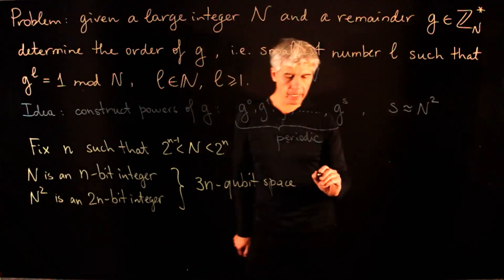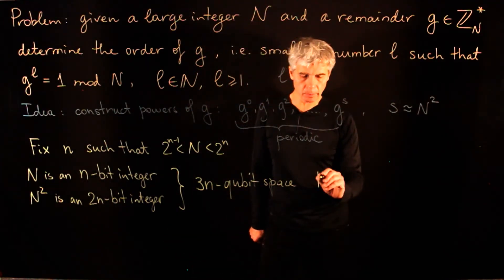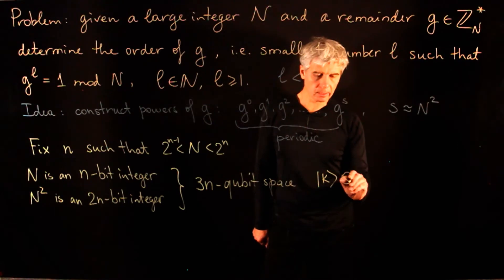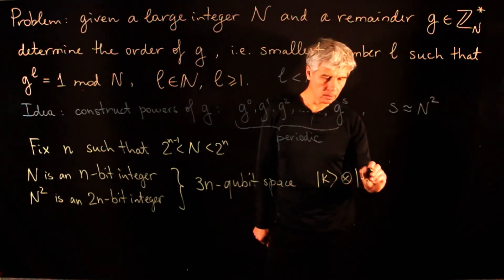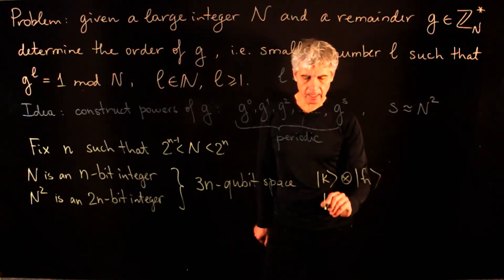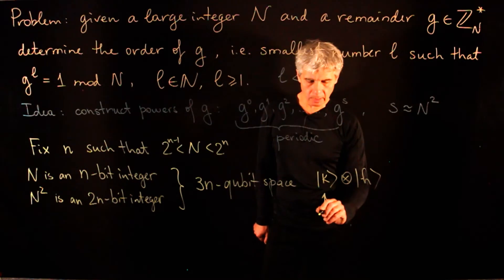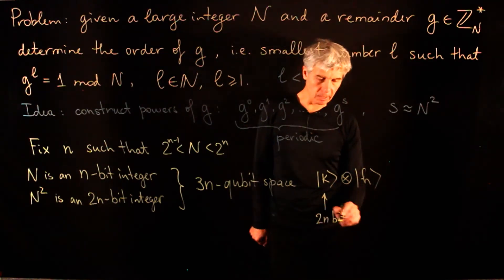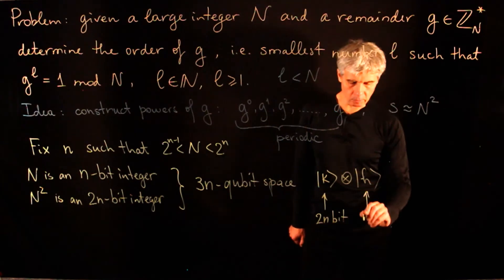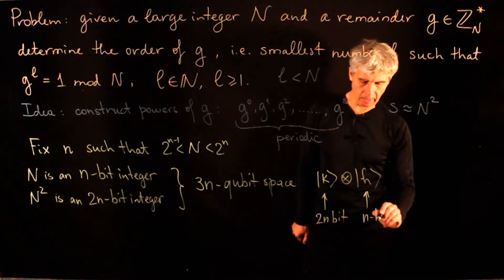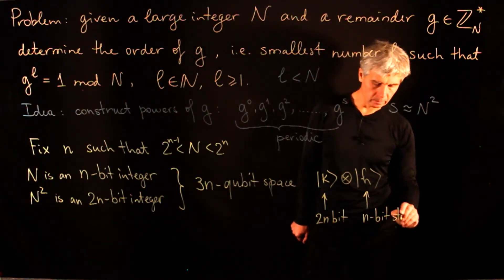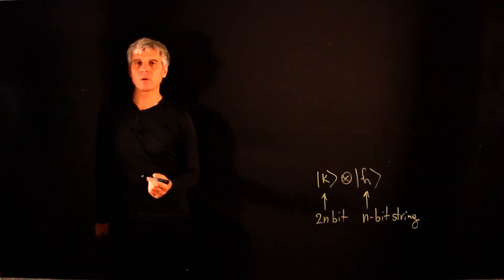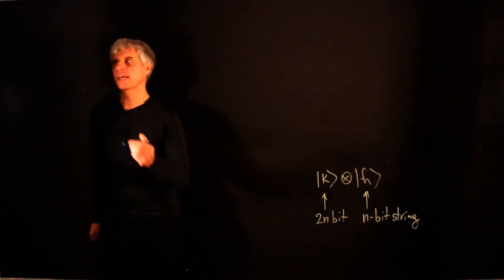We write down basis vectors in this space as |k⟩ ⊗ |h⟩, where k is going to be a 2n-bit string and h is going to be an n-bit string. Now let us present the steps of Shor's algorithm.